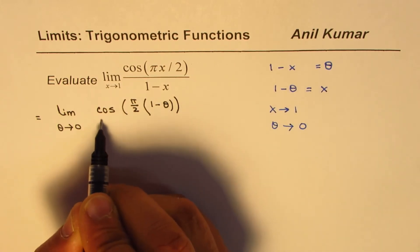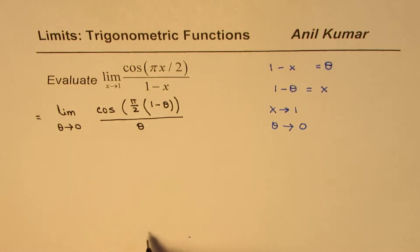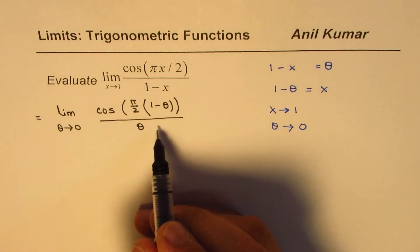That's the numerator. And the denominator, 1 minus x will be written as θ. So that is how we can substitute. And now, it will be simpler to find the limit of this question.